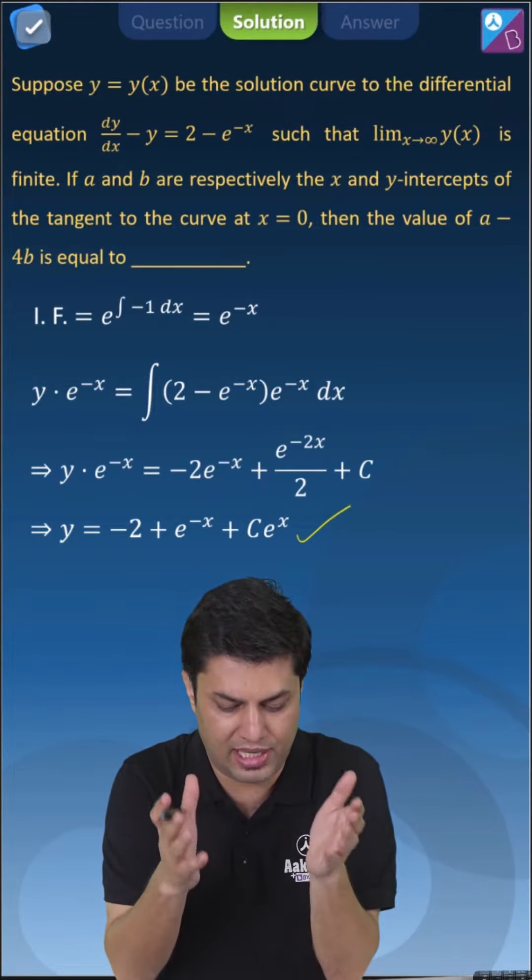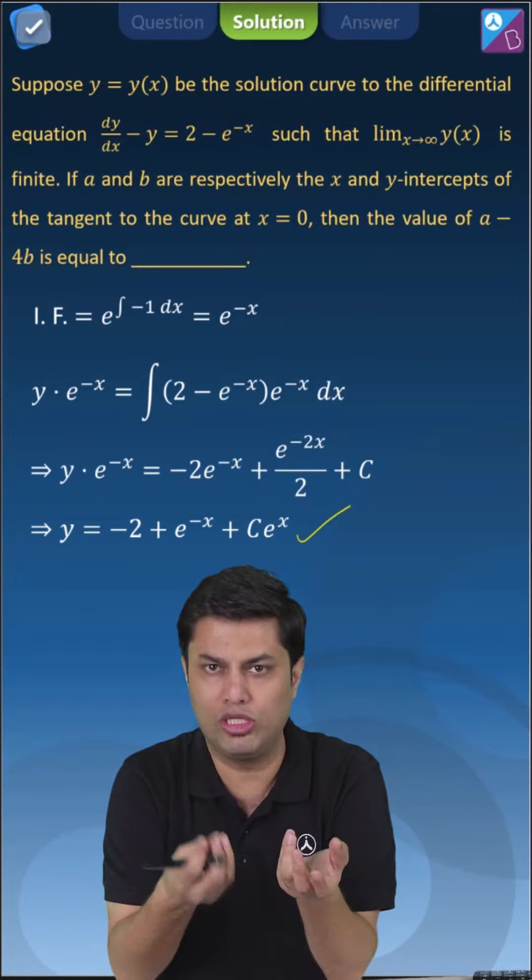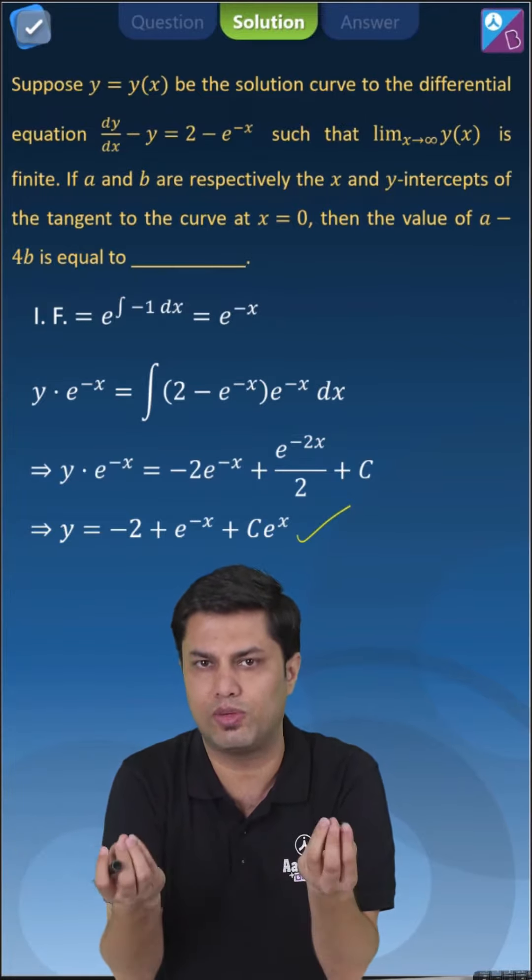Now, because the limit extending to infinity is finite, e to the power infinity tends to infinity, that's why c is 0.